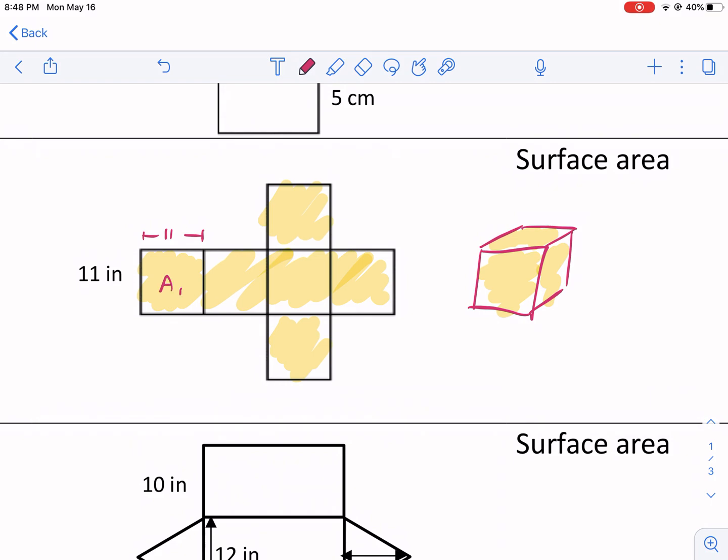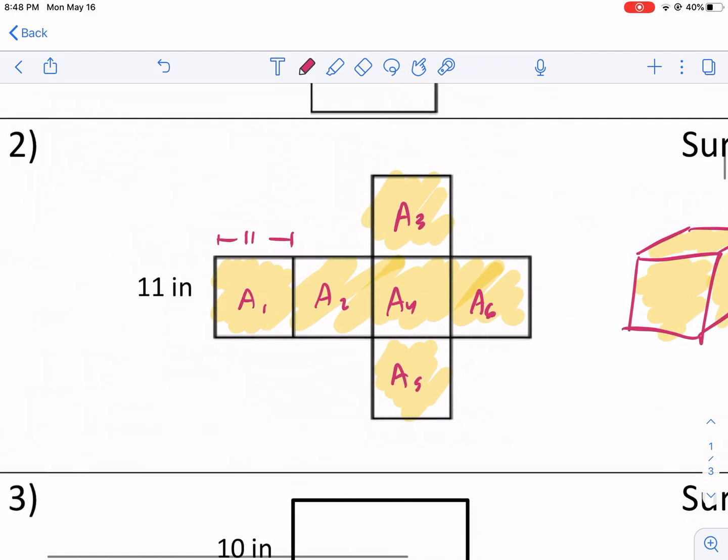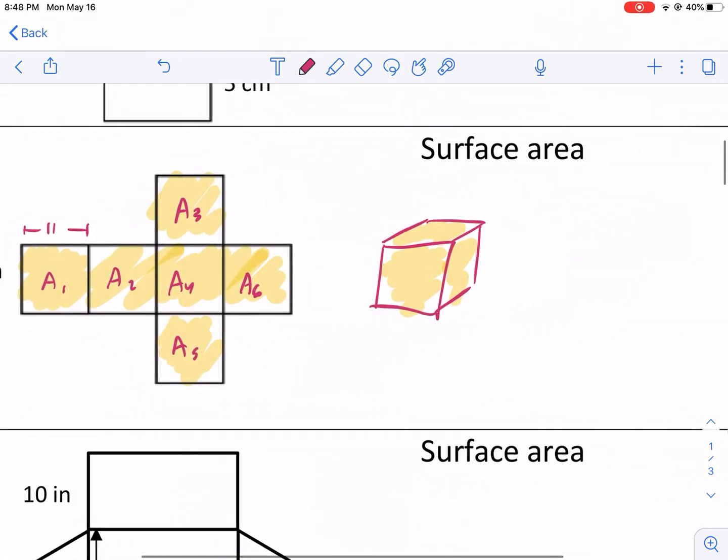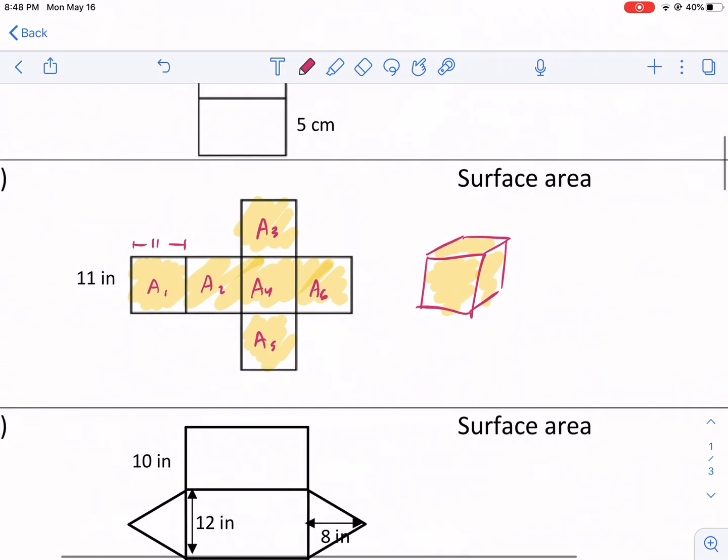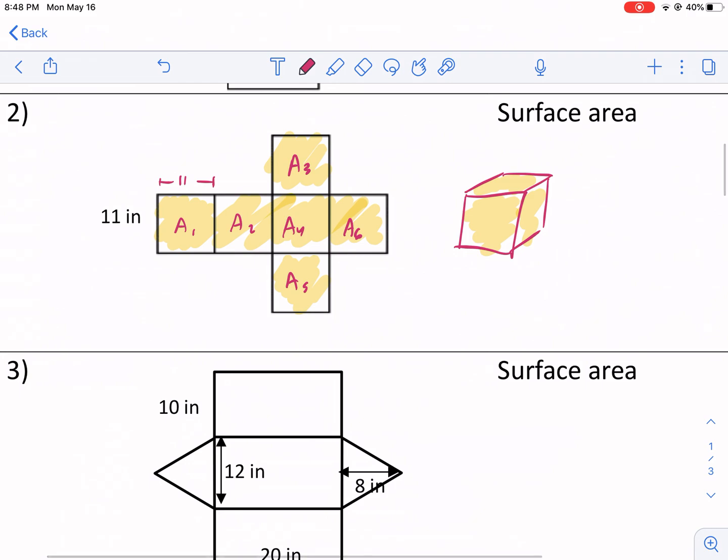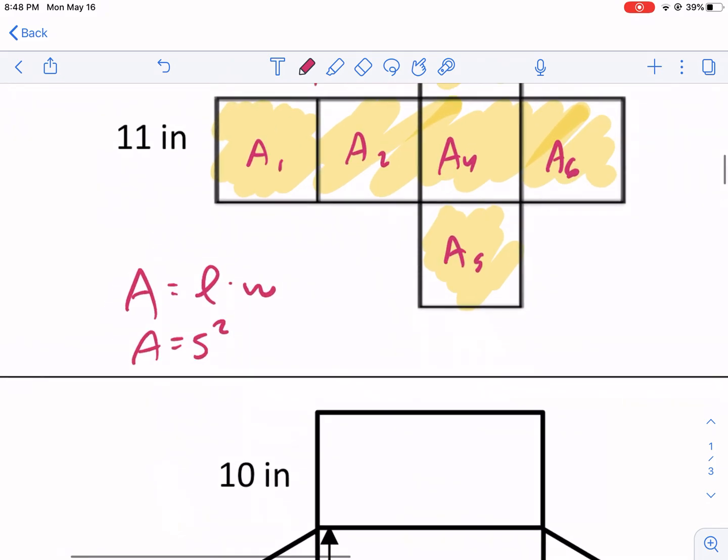So it's very simple. We just need to find the area of each one - area one, area two, area three, area four, area five, and area six. We're going to add up all those different areas. A stands for area. Now, we need to know some basic formulas for this. The basic premise of area of a square is length times width or side squared.